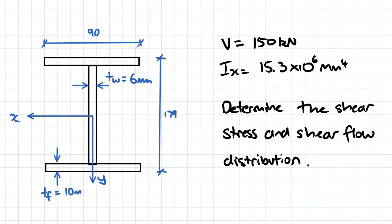So let's have a look at the question here. We've got our UB here, which has a flange width of 90, thickness of flange of 10, thickness of web of 6 millimeters, and a total depth of 179 millimeters.